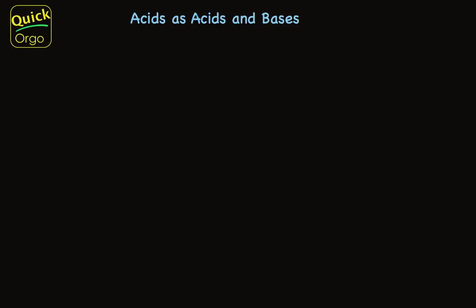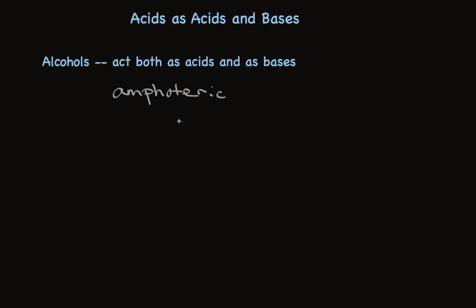Alcohols can act both as acids and as bases. This puts them in a category of compound we call amphoteric. Let me first talk a little bit about these compounds as acids, and then I'll talk a little bit about these compounds as bases.